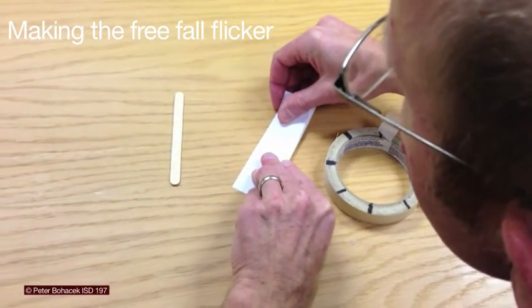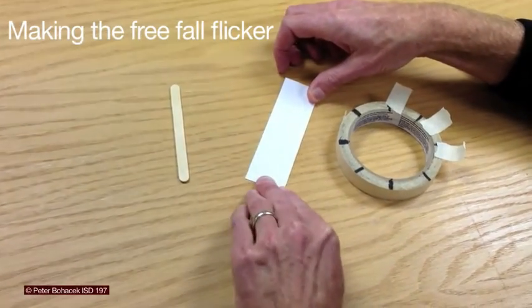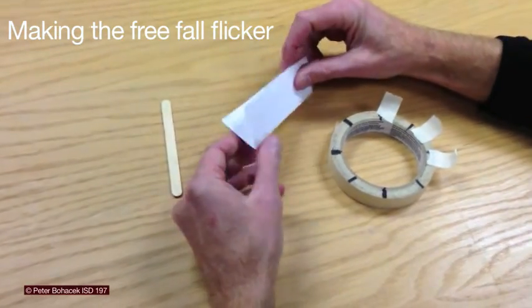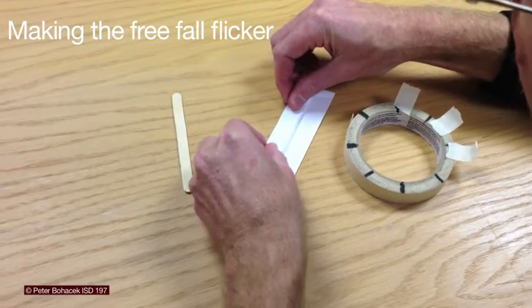To make the free fall flicker, start by folding the index card in half the long way, or hot dog way. Then fold again.